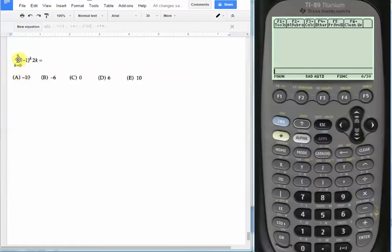So here's our question. We have to evaluate the summation of negative 1 to the k times 2k for all k's that start at 0 and end at 5.